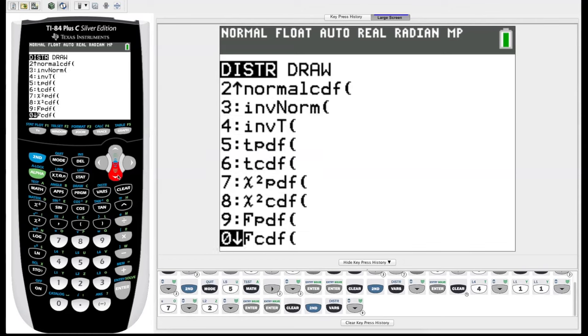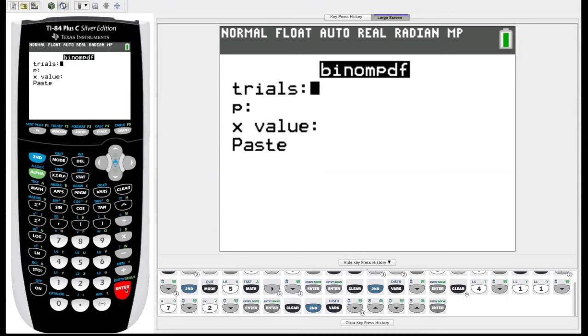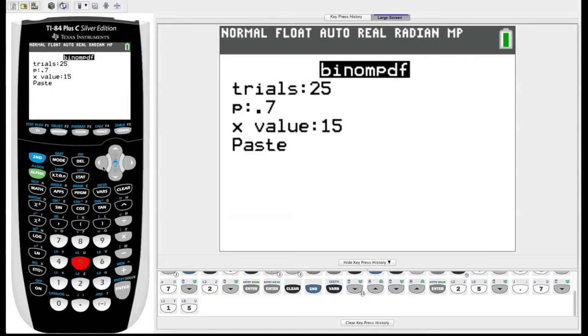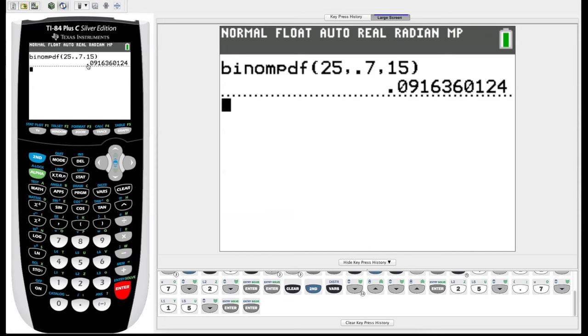To binomial pdf and cdf. Binomial pdf will calculate the probability of a certain number of successes in n trials. We hit enter and it asks us for the number of trials. Let's say there are 25 trials. P value is the probability that a given trial succeeds, so let's say there's a 0.7 chance of success, and a specific x value. Let's say the odds of 15 successes occurring in 25 attempts given a probability of 0.7. We hit paste, enter, and it tells us that the probability of exactly 15 successes occurring is 0.091, so 9.1 percent.